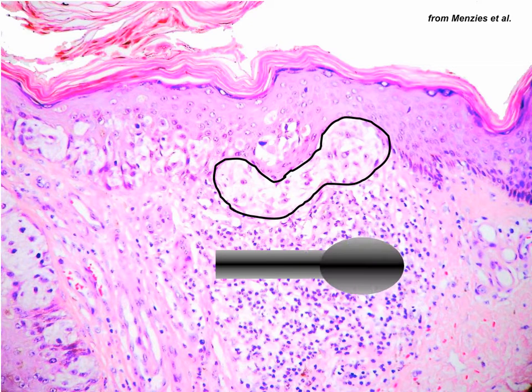This is what it looks like in dermoscopy, and this is what it looks like in histopathology. Why do we have a dermoscopy criterion — the pseudopod — which is very reliable, yet these pseudopods are not used by histopathologists to make their diagnosis? Well, this is very simple. A pseudopod you can only see in a horizontal view.